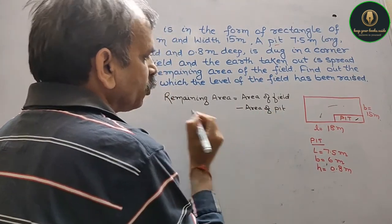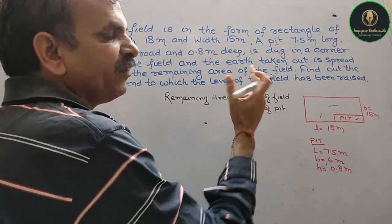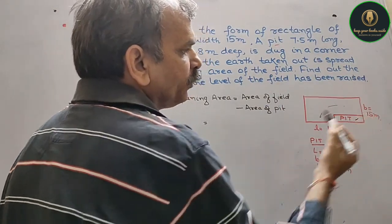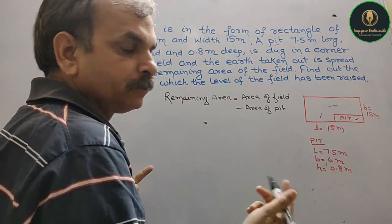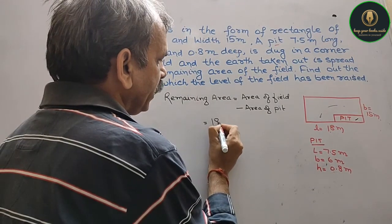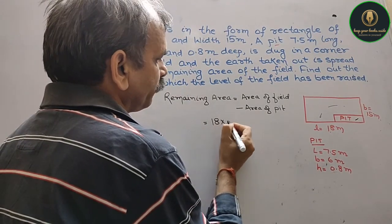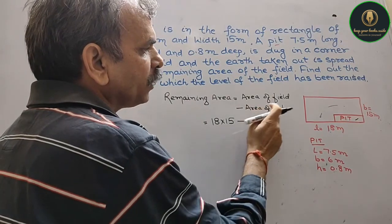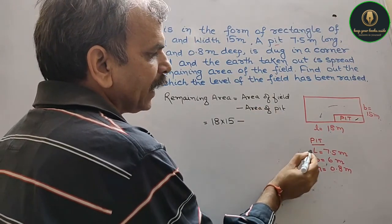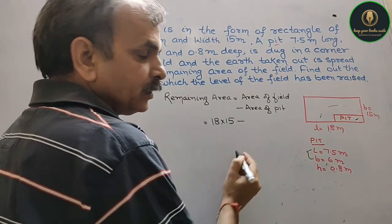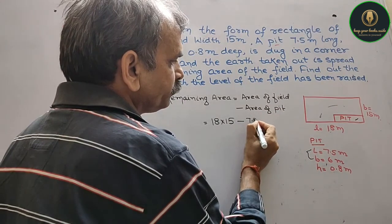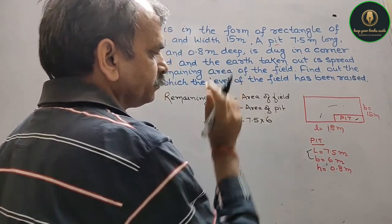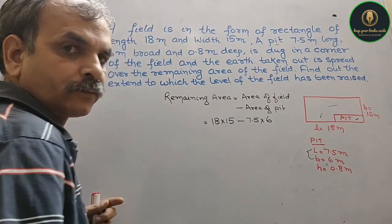So, remaining area equals area of the field minus area of the pit. Area of the field is 18 into 15 (length into breadth). Then minus area of the pit: length into breadth is 7.5 into 6.